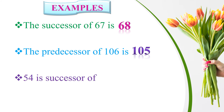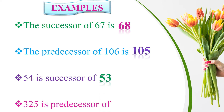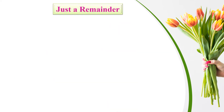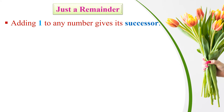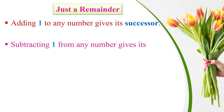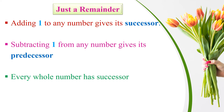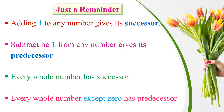54 is the successor of 53 — since adding one gives the successor. 325 is the predecessor of 326. Just a reminder: adding one to any number gives its successor; subtracting one from any number gives its predecessor. Every whole number has a successor. Every whole number except zero has a predecessor.